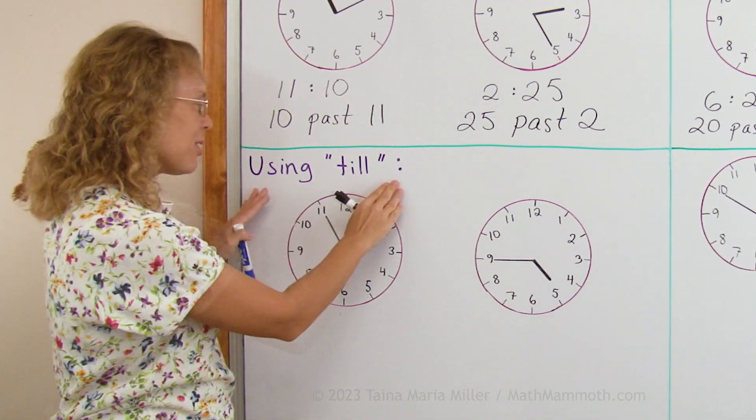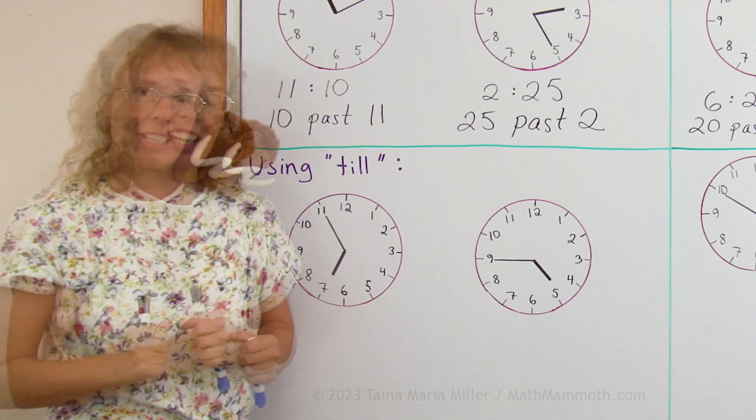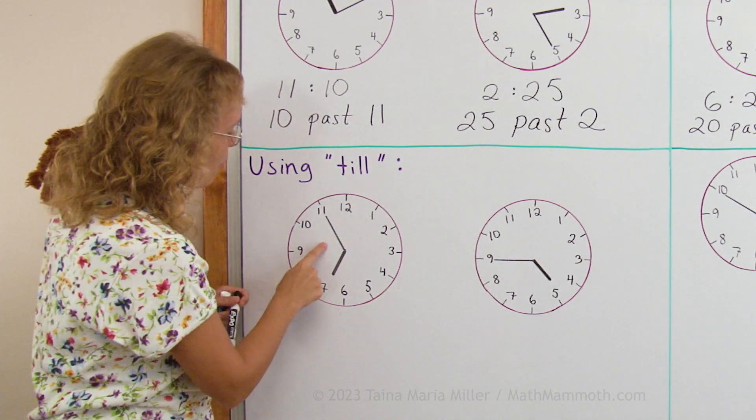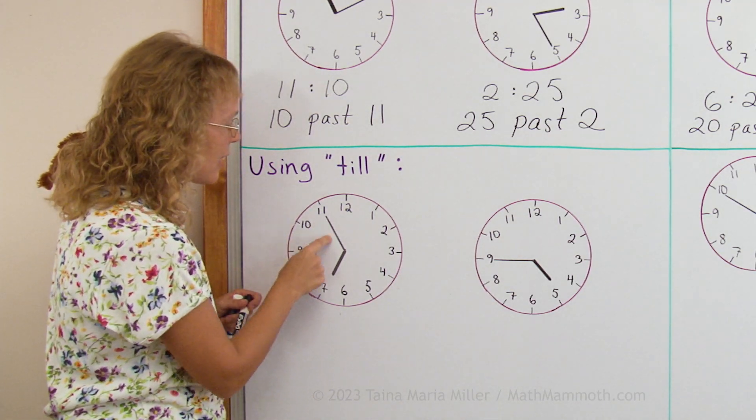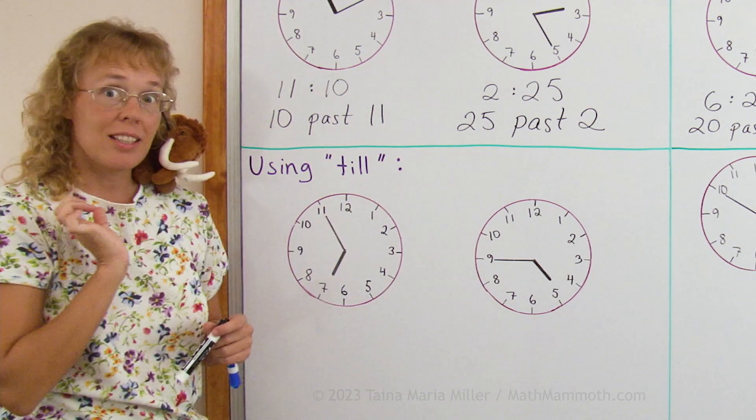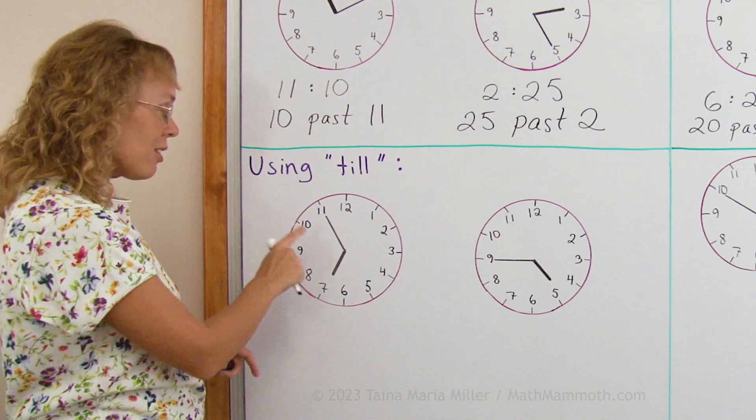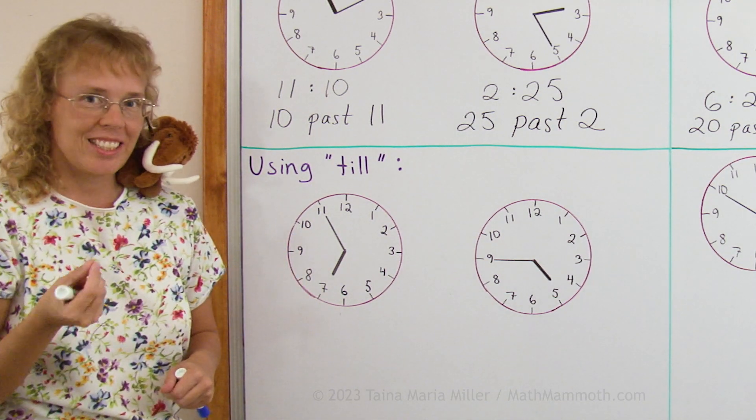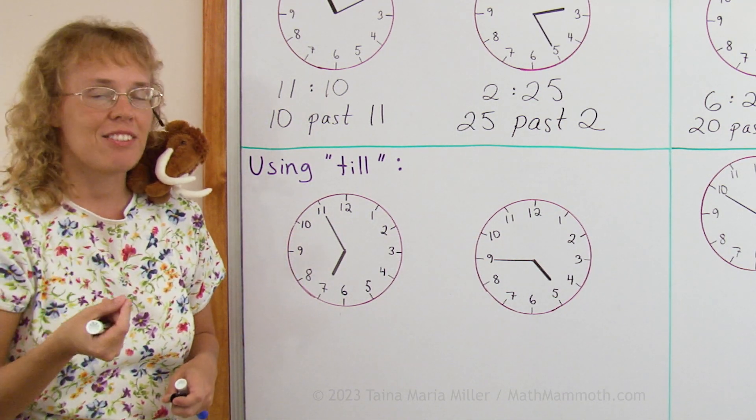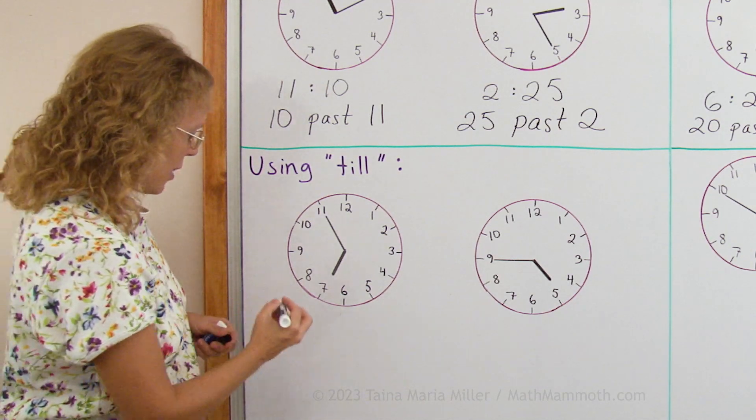We use the word till to say how many minutes till the next whole hour. For example here, the minute hand is just 5 minutes till the next whole hour, which is 7 hours. So this time is 5 till 7, 5 minutes till 7 hours. So let me write it here.